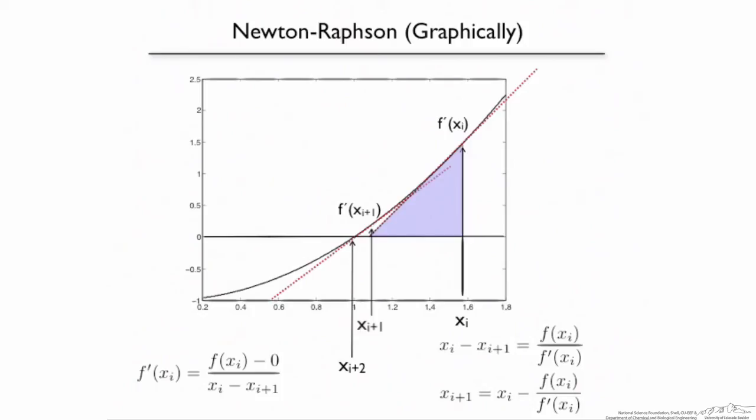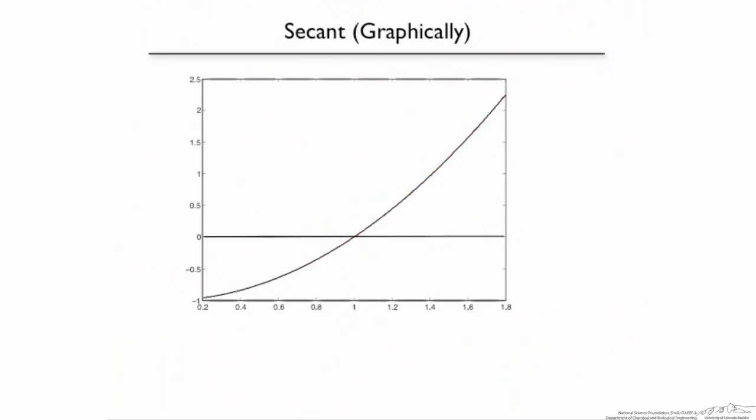Now, one key to this is that we need to have an analytical derivative. If we have an analytical derivative, then we're all set. But maybe the function that we're interested in is the output of some much larger program, and we can't really go in and compute that derivative exactly. So what we need is a way to approximate the derivative. So that takes us to the secant method.